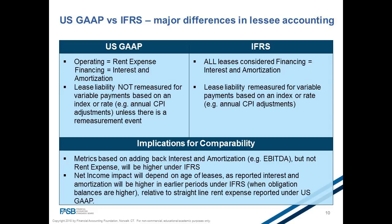Sometimes non-lease components and lease components are both included in a single contract — for example, combining equipment with service. Lessors and lessees must determine whether a contract contains a non-lease component, such as maintenance services, along with the lease component, similar to identifying different performance obligations in revenue recognition. If multiple components exist, they must be accounted for separately, and total consideration is allocated between lease and non-lease components. Property taxes and insurance are not separate components. However, there are exceptions: both lessees and lessors can elect not to separately account for lease and non-lease components, though lessors must meet certain criteria to make this election.